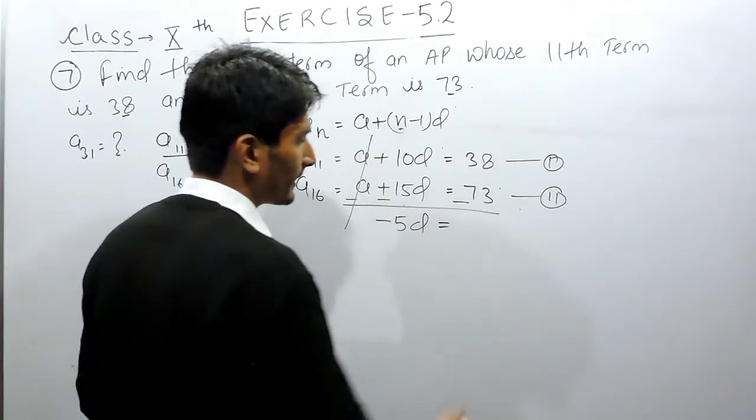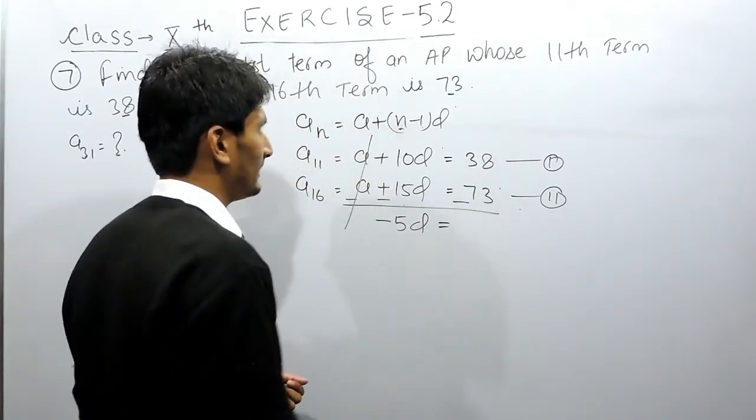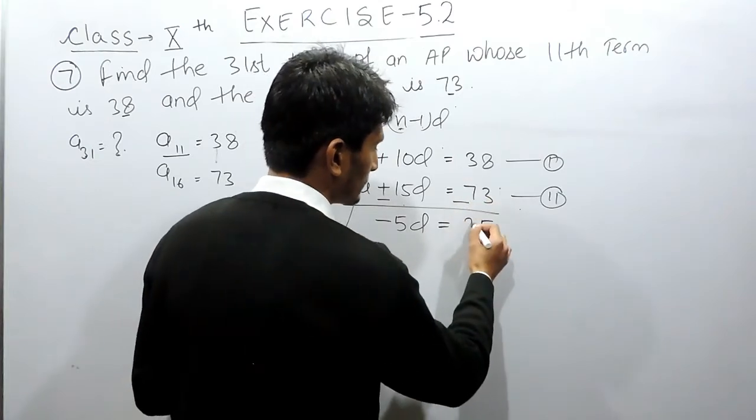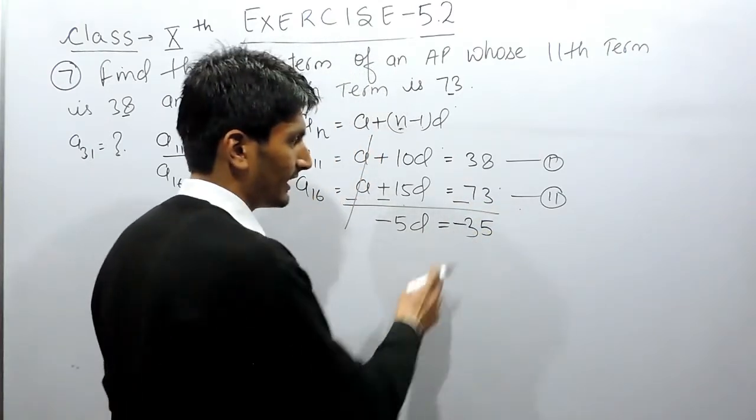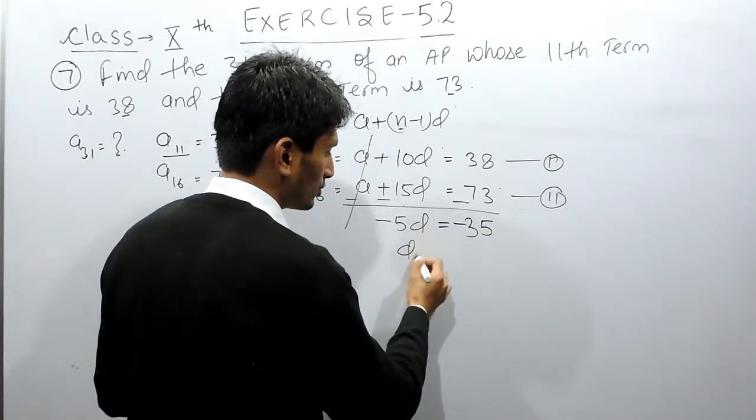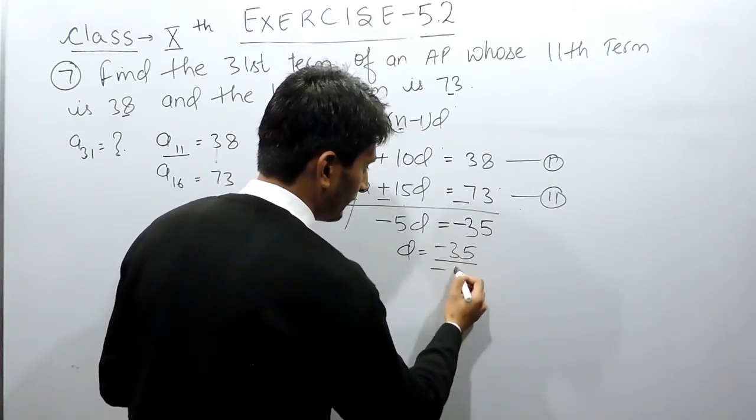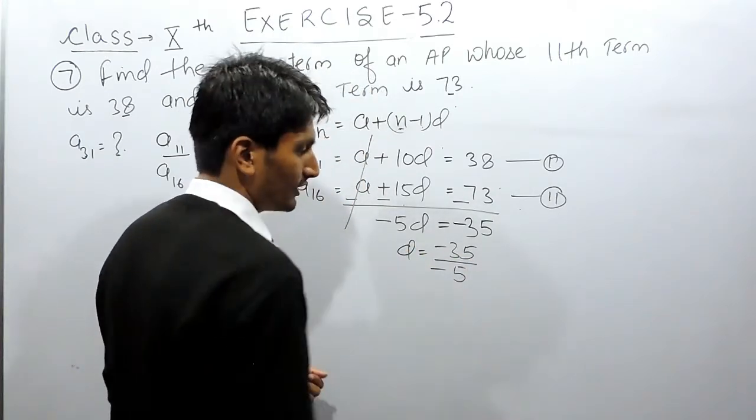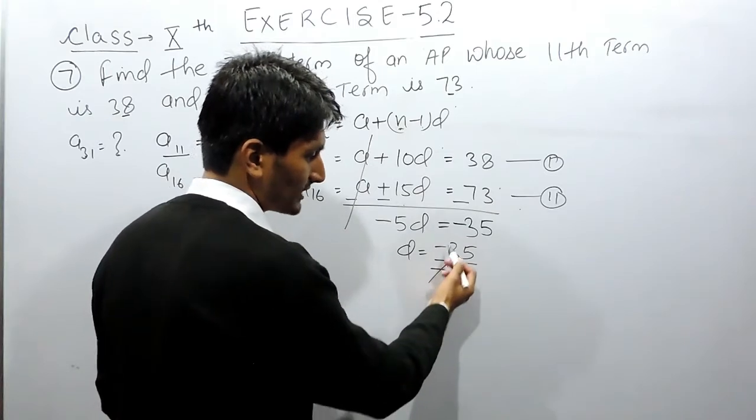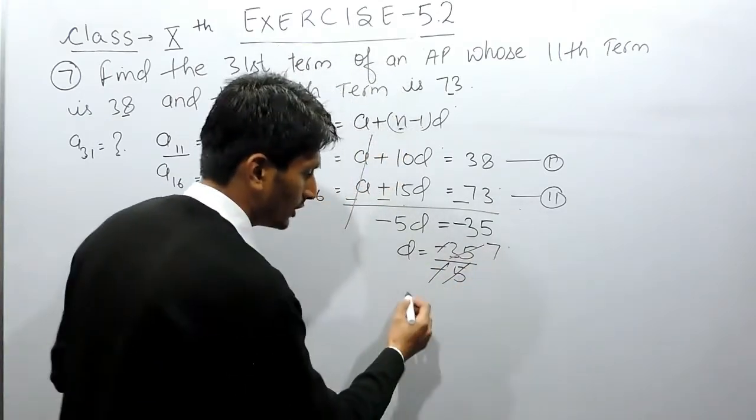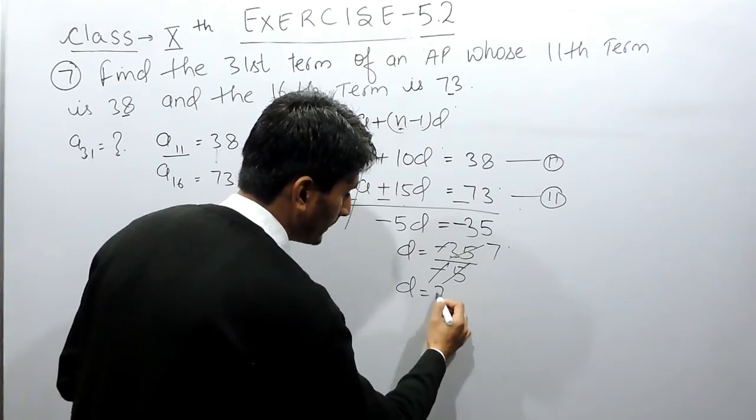Similarly here also we can subtract this, so 73 minus 38 is 35 with negative sign again. The value of d will be minus 35 upon minus 5. Minus minus can be cancelled out, and this can be cancelled seven times, so the common difference here must be 7.